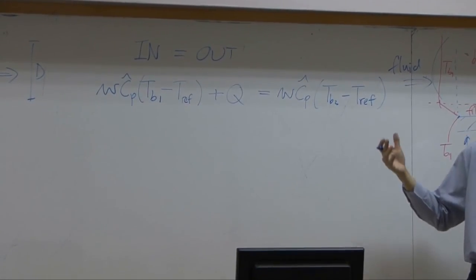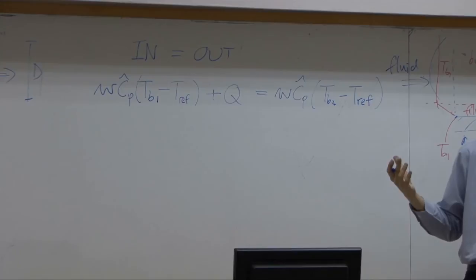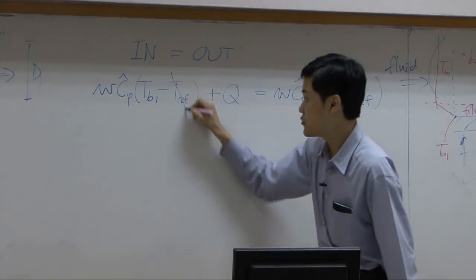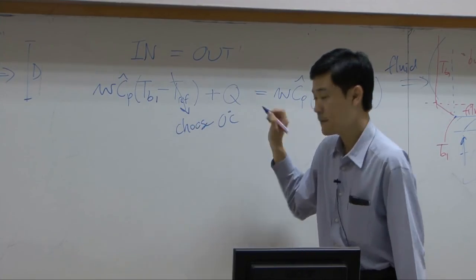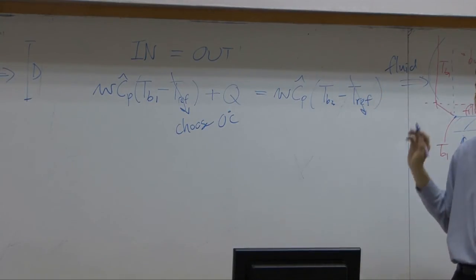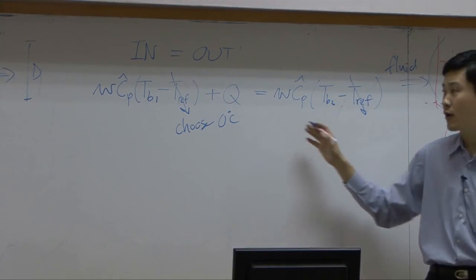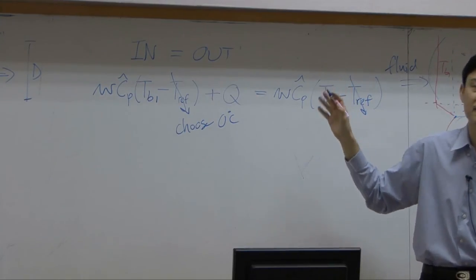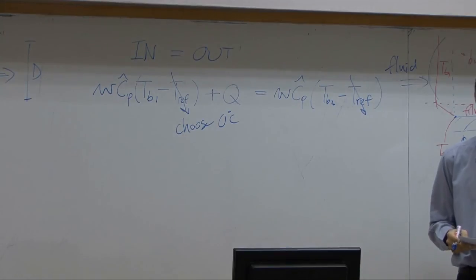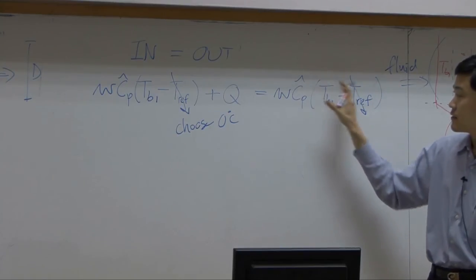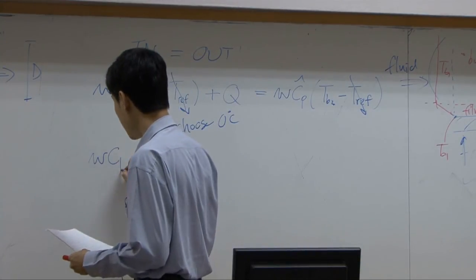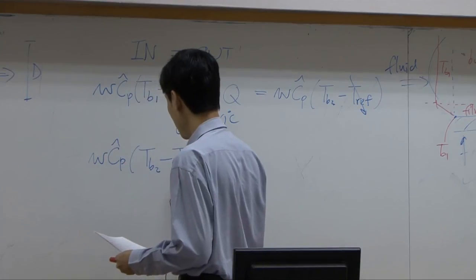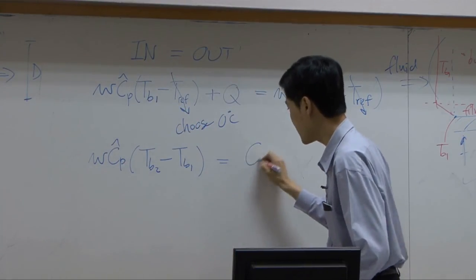According to thermodynamics, reference temperature can be any number that we choose. And normally, we choose it to be zero degree, just so that we can drop this term out easily. You don't need to worry about temperature different, I mean reference temperature anymore. So if I move the Cp delta T here together, you have W Cp Tb2 minus Tb1 equal to Q.